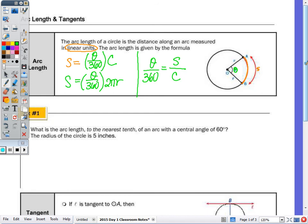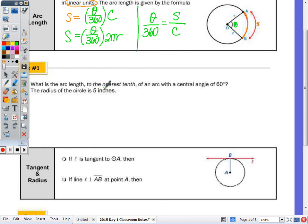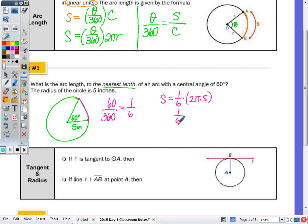Question one asks: what is the arc length to the nearest tenth of an arc with a central angle of 60 degrees and radius 5 inches? 60 out of 360 is one-sixth of the circle, so the arc length is one-sixth of 2πr. With radius 5, that's one-sixth of 10π, which rounds to approximately 5.2 inches.